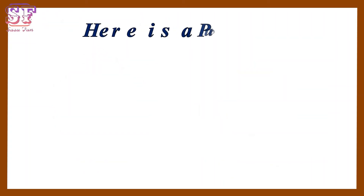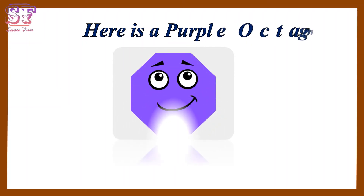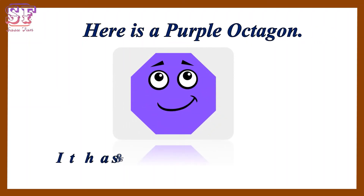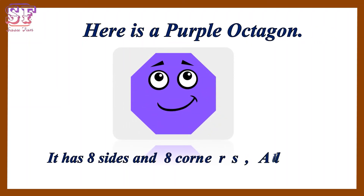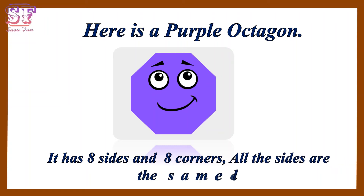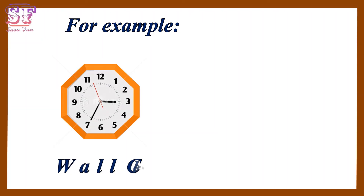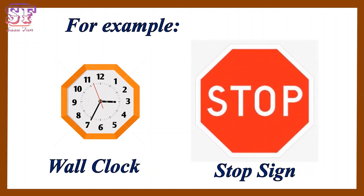Here is a purple octagon. It has eight sides and eight corners. All the sides are the same length. For example, wall clock and stop sign.